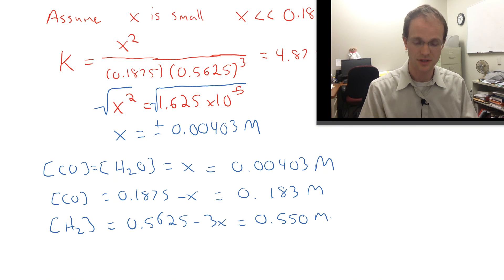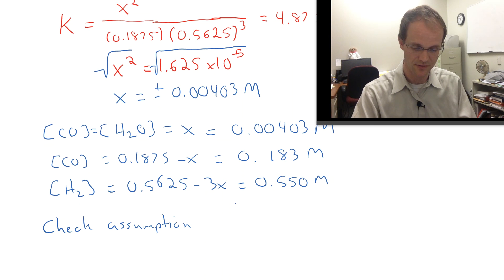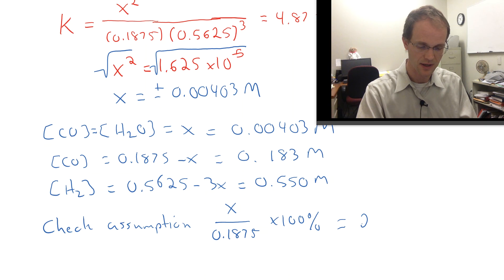So how do you quantify whether our assumption was good? What you do to check the assumption—our assumption was that X was much less than 0.1875—so we're going to compare that. We're going to compare X to 0.1875 as a percentage, and if you do that, you get 2.1%, and that's fine. 2.1% is an okay assumption. It's not perfect. It means the value of X is going to be a little bit off, but not by very much. So 2.1%, anything less than 5%, we're okay.